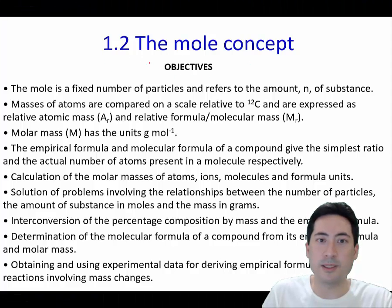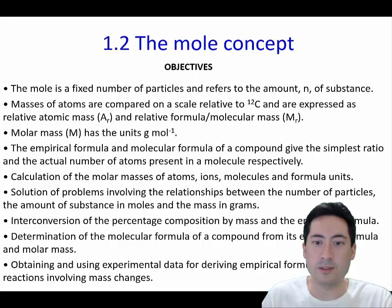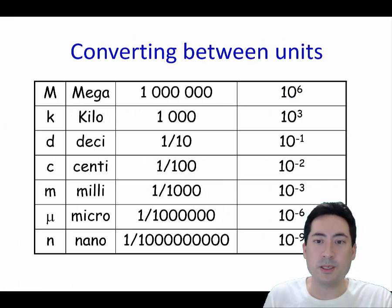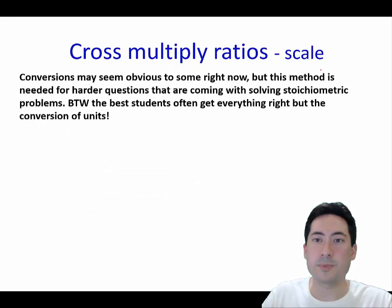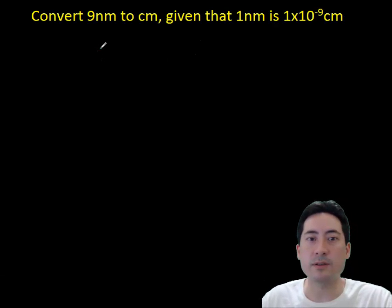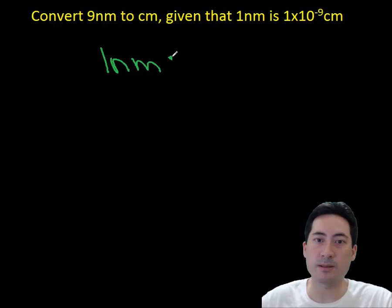Okay, this second unit focuses completely on the mole, so we're going to look at different ways we've worked with the mole and then we'll move on to how to work out some volumes and masses. First of all, you need to be aware of these units if you're not already aware of those things. How to convert between different scales. So the first one here is convert 9nm to cm, given that 1nm is 1x10^-9 cm.